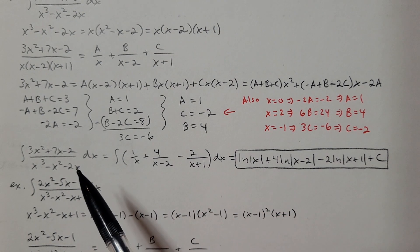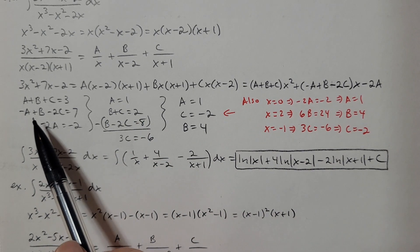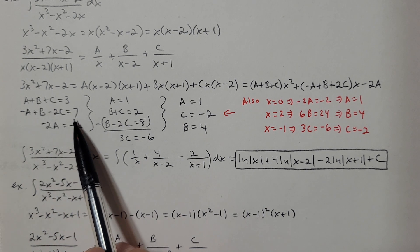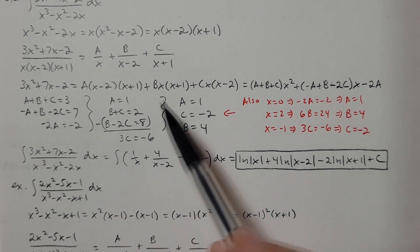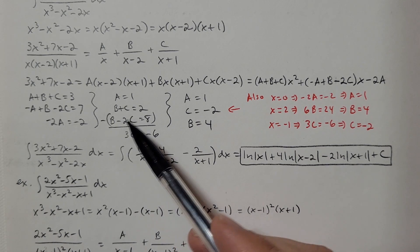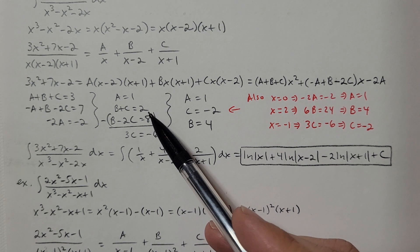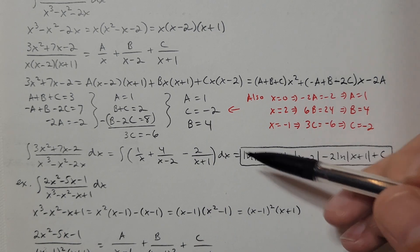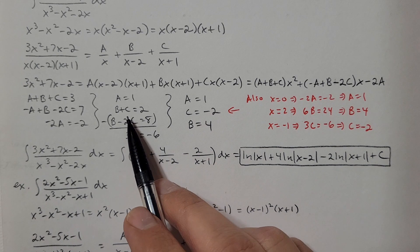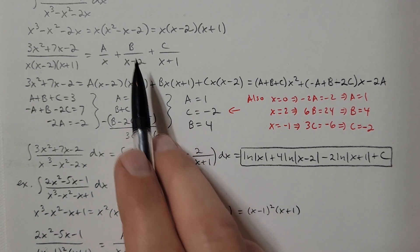Solving the system: dividing both sides of the third equation by negative 2 gives a equals 1. With a equals 1, subtracting 1 from both sides of the first equation gives b plus c equals 2. Adding 1 to both sides of the second equation gives b minus 2c equals 8. Subtracting those two equations: b minus b is 0, c plus 2c is 3c, and 2 minus 8 is negative 6. So 3c equals negative 6, meaning c equals negative 2. Then b minus 2 equals 2, so b equals 4. Therefore a equals 1, b equals 4, and c equals negative 2.